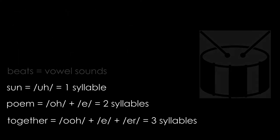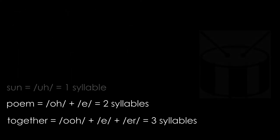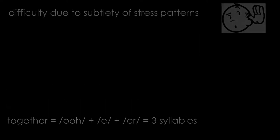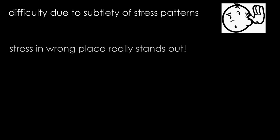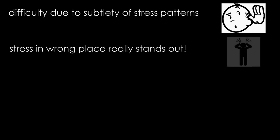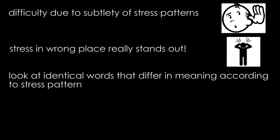The difficulty in identifying the rhythmic pattern of a poem often lies in the subtlety of the stress patterns themselves. We're usually quite unaware of them, but if someone says something with the stress in the wrong place, it sticks out like a sore thumb. The easiest way to distinguish between stressed and unstressed syllables is to look at the same word which alters its stress patterns according to whether it is a noun or a verb.